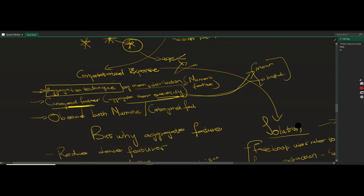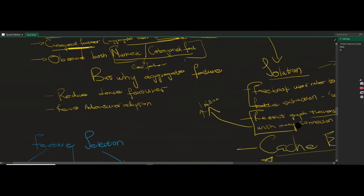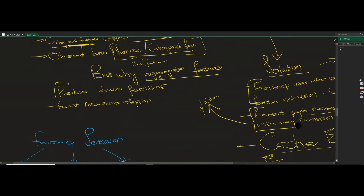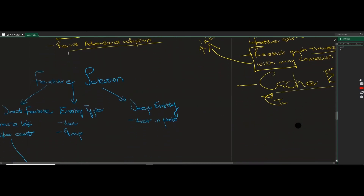They observe both numerical and categorical features and try to create cross features — one feature derived from both numerical and categorical inputs, which is quite good. Aggregating features reduces dense feature space and is also resistant towards adversarial adaptation.